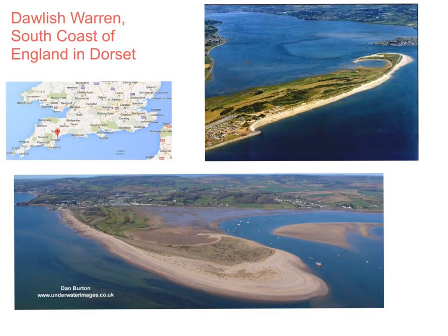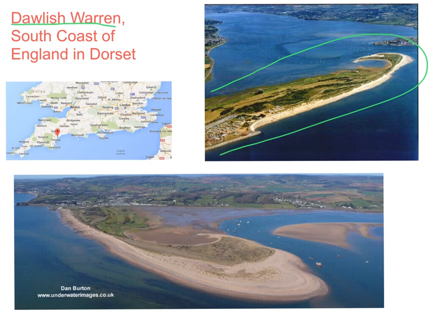Here is your example of a spit — this is Dawlish Warren. Here it is in the picture, growing out from the coast. It goes across the river estuary, and it's on the south coast of England close to the town of Torquay.